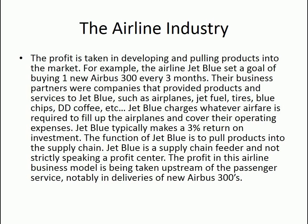The profit is taken in developing and pulling products into the market. For example, JetBlue set a goal of buying one new Airbus A300 every three months. Their business partners were companies that provided products and services to JetBlue — such as airplanes, jet fuel, tires, Blue Chips, DD coffee, etc. JetBlue charges whatever airfare is required to fill up the airplanes and cover operating expenses, making about a 3% return on investment. The function of JetBlue is to pull products into the supply chain. JetBlue is a supply chain feeder, not strictly a profit center. The profit in this model is taken upstream, notably in deliveries of new Airbus A300s.